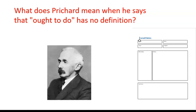Today's thinker is Pritchard — H.A. Pritchard, to give him his full title. Pritchard is the named scholar on the spec along with Moore, so you could have a question that focuses just on Pritchard, or a general question in which you introduce both Moore and Pritchard and perhaps point out where they are similar and different. Our question for today's lesson is taken directly from the specification: what does Pritchard mean when he says the 'ought to do' has no definition? Please note: we should spell scholars' names correctly — it gives the air of a student going for a grade A or A-star. Pritchard doesn't have a T in it. He's P-R-I-C-H-A-R-D.